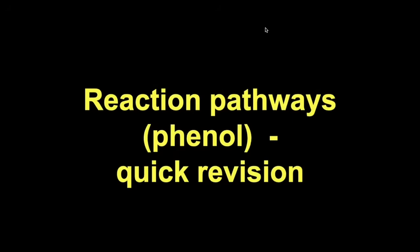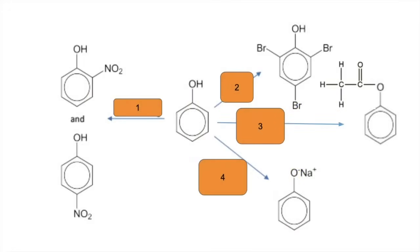Quick revision video for the reaction pathways for phenol. I'm going to do this the same as the other two. Pause the video and think about what's under those four boxes, then play on when you're ready. Number one: how do you get the nitro group onto the benzene ring of phenol at positions 2 and 4? You react it with dilute nitric acid. Number two: how do you get three bromines onto the benzene ring at positions 2, 4, and 6? You react it with an excess of bromine.